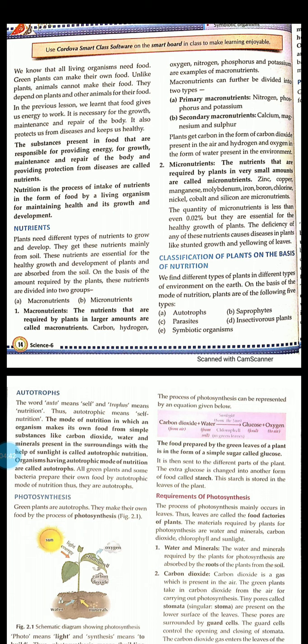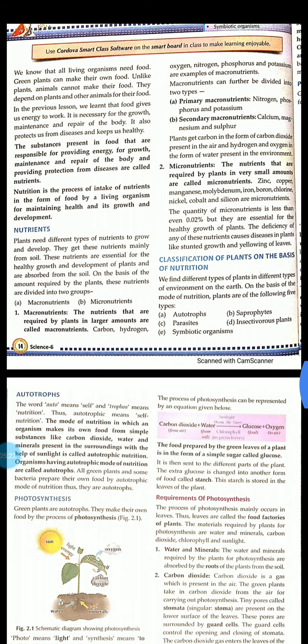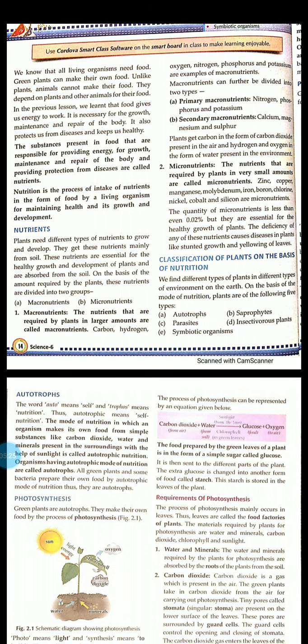The first one is macronutrients and the second one is micronutrients. Macro means larger and micro means smaller. The nutrients that are required by plants in a larger amount are called macronutrients. Examples of macronutrients are carbon, hydrogen, oxygen, nitrogen, phosphorus and potassium. Macronutrients can further be divided into two types: primary macronutrients and secondary macronutrients.